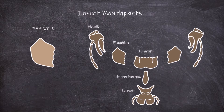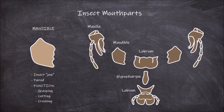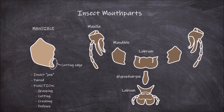The mandibles are also known as the insect jaws. They are paired structures — one is found on each side of the head. They function in grasping, cutting, and crushing food, and can also function in defence of the insect against predators or competitors. The mandibles move along the horizontal plane towards each other in the middle. Each mandible often has a distal cutting edge with teeth on it, then further back a molar area used for crushing and grinding up food.